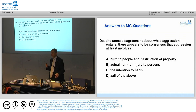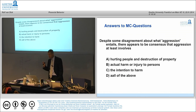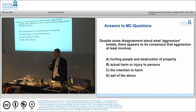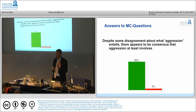A student asks whether 'all of the above' means all answers are right. The instructor replies they are all wrong except the intention to harm. The intention to harm is the correct answer — hurting people, destruction of property, or actual harm and injury are not part of the social psychological definition. Almost everyone got this right, but the intention to harm is the necessary element, not actual harm or destruction of property.